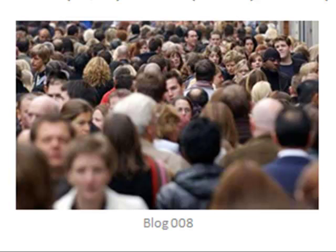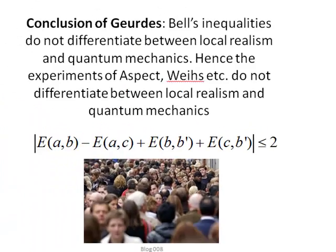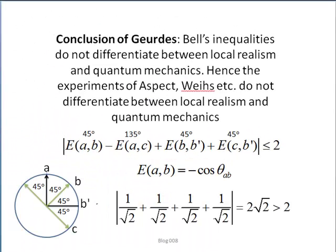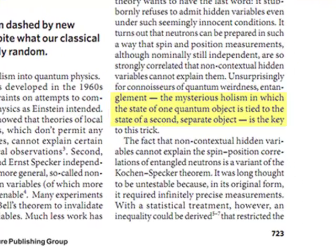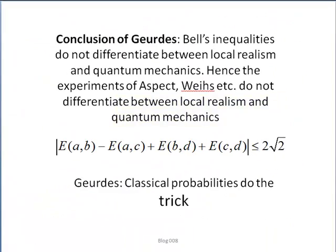No classical correlations, according to Bell, can exceed the value of 2. But it is well known that if the filters are set as shown here in EPR coincidence experiments, then these quantum results violate Bell's inequalities. No one has ever been able to explain that quantum correlation of 0.0828, except to surmise it is due to entanglement — the mysterious holism in which the state of one quantum object is tied to the state of a second, separate object. Well, no. Entanglement is not the key to the trick.